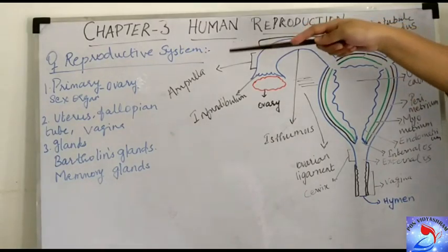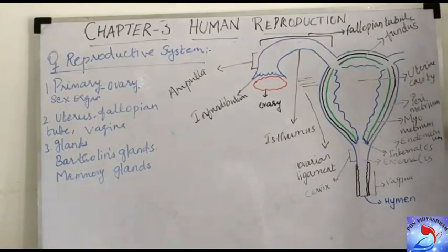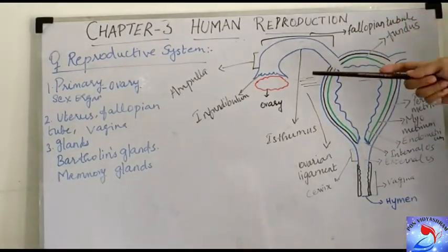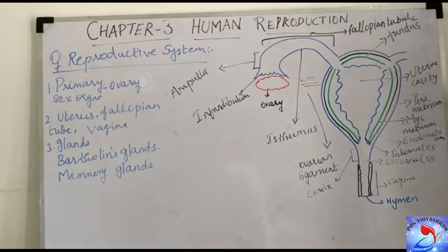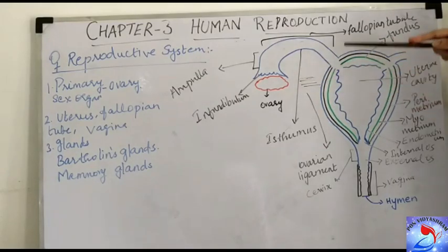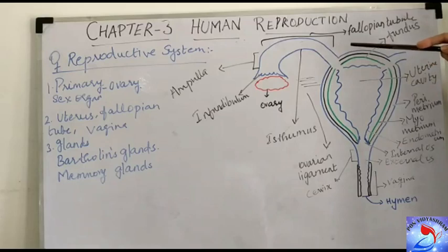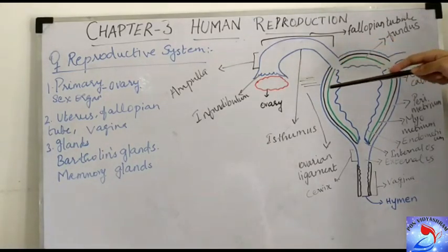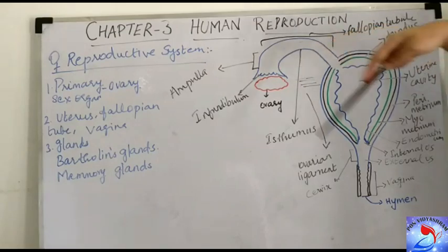The ovary, which is the primary sex organ, is an almond-shaped structure. There are two ovaries present, located in the pelvic region inside the abdominal cavity. Unlike the male reproductive system where the testes are extra-abdominal because spermatogenesis requires a temperature 2–3 degrees Celsius below body temperature, the ovary is placed inside the abdominal cavity. It is suspended there by a transparent mesentery called the mesovarium.